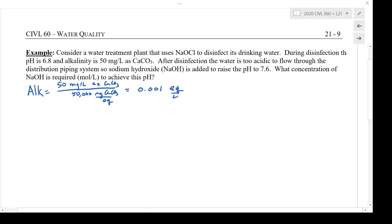Now I happen to have a table of alpha values for the carbonate system where I've solved the alphas at various values of pH. So I know at a pH of 6.8 my alpha one is going to be 0.7596 and my alpha two will be 0.0002.